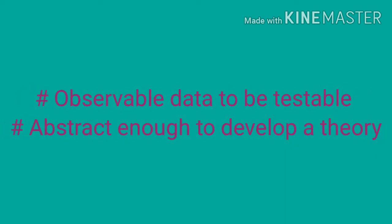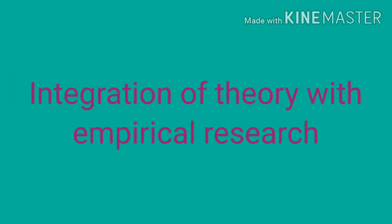Middle-range theories are those that are close enough to observable data to be testable and abstract enough to form systematic theory development. Merton argues that the problem with Parsons' theory is that he developed a unified theory where whatever data is collected empirically may fit into it, but Merton believes this will not bring actual results. Parsons attempted to construct a total theoretical system covering all aspects of social life, whereas Merton advocates that sociology should concentrate on measurable aspects of social reality that can be studied as separate social phenomena, rather than attempting to explain the entire social world. In this way, Merton made an attempt to integrate theory with empirical research.